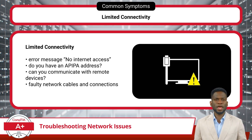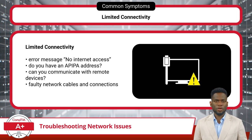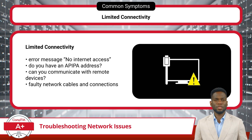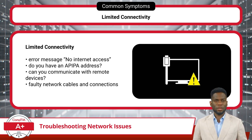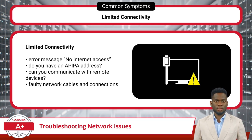If the device has an APIPA address, it indicates a problem with the DHCP server or the device's network configuration. Another troubleshooting step involves testing connectivity by trying to communicate with a remote device or IP address. After ruling out software-based causes, you can move on to physical causes, such as faulty network cables and connections.